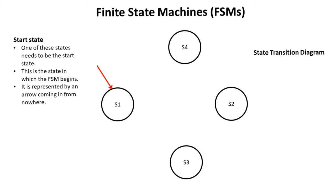Typically one of these states will need to be a start state. This is the state in which the finite state machine begins and we represent it by an arrow that's coming in from nowhere. So here state one would be our start state.